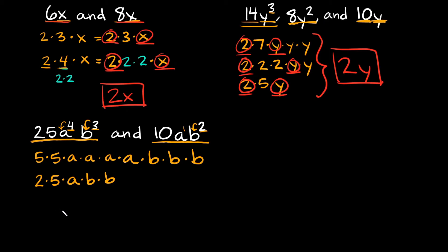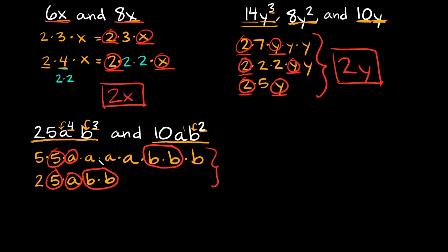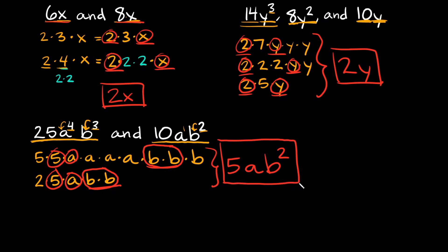Now circle whatever they have in common. We can see both have a 5. Both have an a. We have 2 b's in the second term, and at least 2 b's in the first term, so we circle 2 b's — that's b squared. The first term has another 5, but the second doesn't. The second term has a 2, but the first doesn't. So the greatest common factor is 5ab².